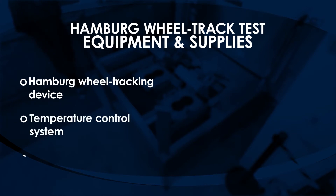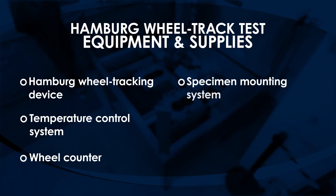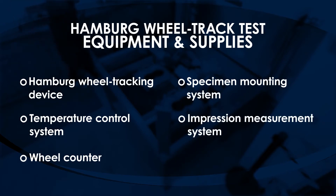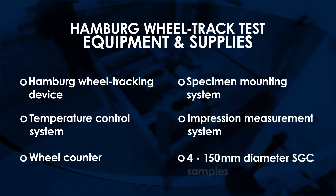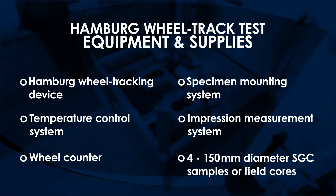Equipment and supplies needed for the Hamburg Wheel Track Test include a Hamburg Wheel Tracking Device, Temperature Control System, Wheel Counter, Specimen Mounting System, Impression Measurement System, and 150 millimeter diameter SGC samples or field cores.